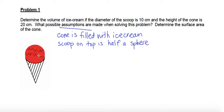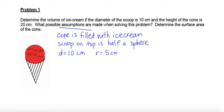We wouldn't want an entire sphere because it wouldn't balance very well and it'd fall off. So we're going to assume it's just half of a sphere to make sure that it sits nicely on top of the cone. We know that the diameter of the scoop — which is also the diameter of our cone — is 10 centimeters, which means our radius is 5 centimeters. The height of the cone is 20 centimeters.